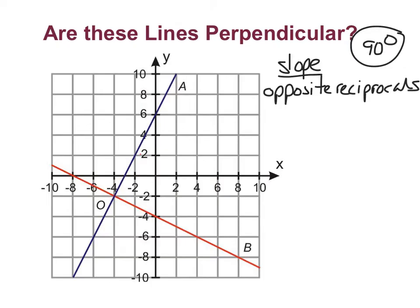Now what does that mean? Well, if I have the fraction 3 fourths, the reciprocal of 3 fourths would be 4 thirds. And for it to be opposite, if this is a positive 3 fourths, the opposite of a positive would be a negative, so it would need to be negative 4 thirds. So it needs to be both opposite and a reciprocal for it to be perpendicular.